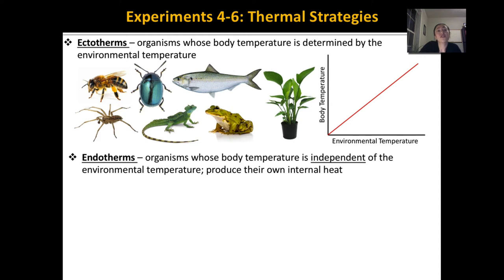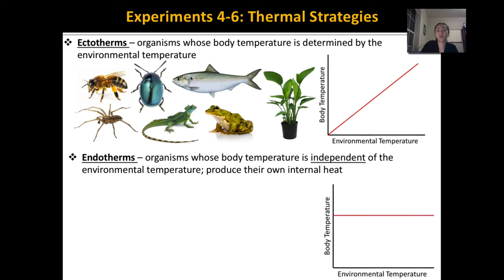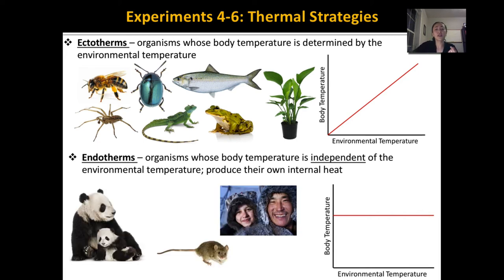The other thermal strategy is called an endotherm. The prefix 'endo' means within, so endotherms are organisms that can produce heat from within their bodies. Their body temperature is independent of the environmental temperature — whether it's cold or hot outside, they regulate and keep a constant body temperature. If you look at the relationship between environmental temperature and body temperature for an endotherm, body temperature stays constant. Endotherms include mammals — anything furry — and also birds.